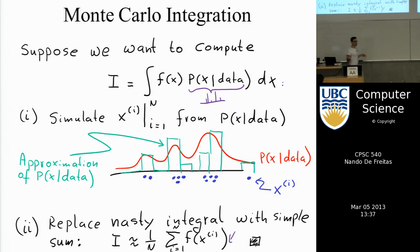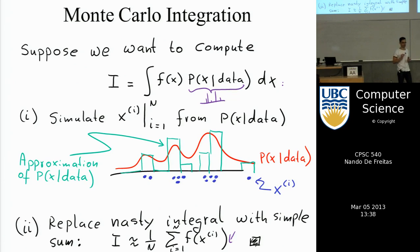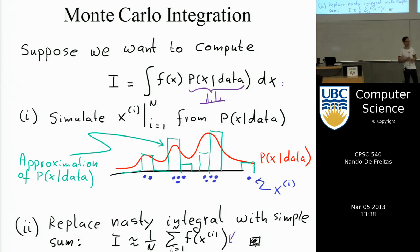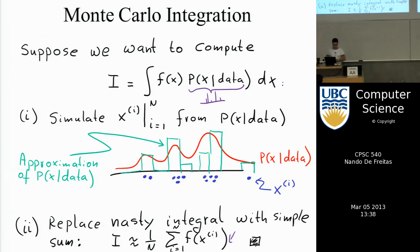The Monte Carlo method simply says: if you have to solve an integral, draw samples from the distribution, then replace the integral by a sum over those samples. That sum is only over the number of samples — typically 1,000 to 10,000 — which can be computed very quickly. The remaining question is how to draw samples from an arbitrary distribution.